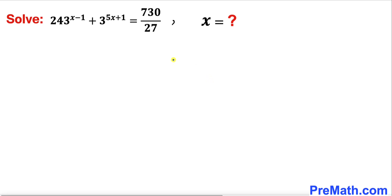Welcome to pre-math. In this video we are going to solve the given exponential equation 243 power x minus 1 plus 3 power 5x plus 1 equals to 730 divided by 27.